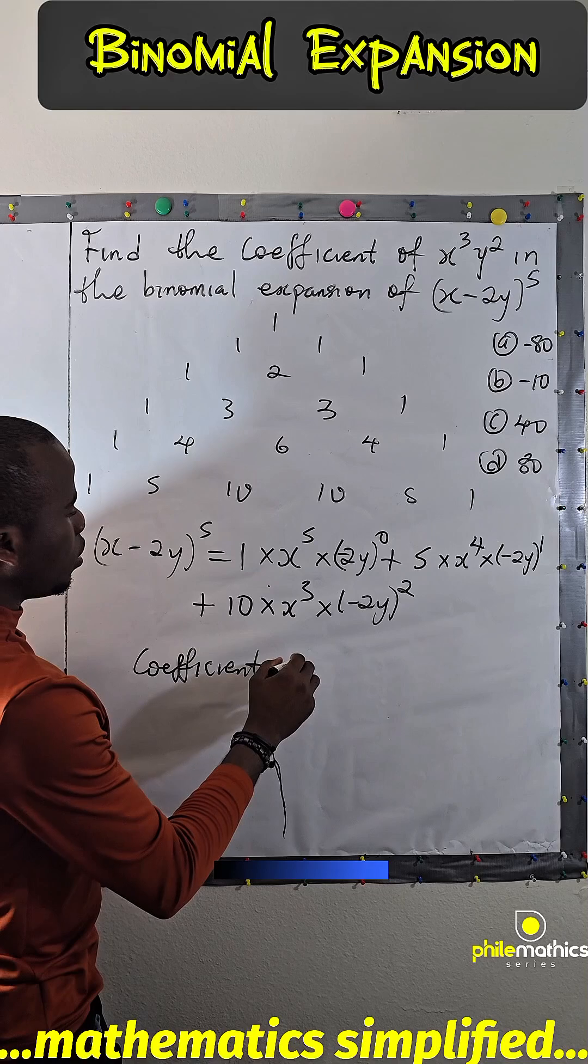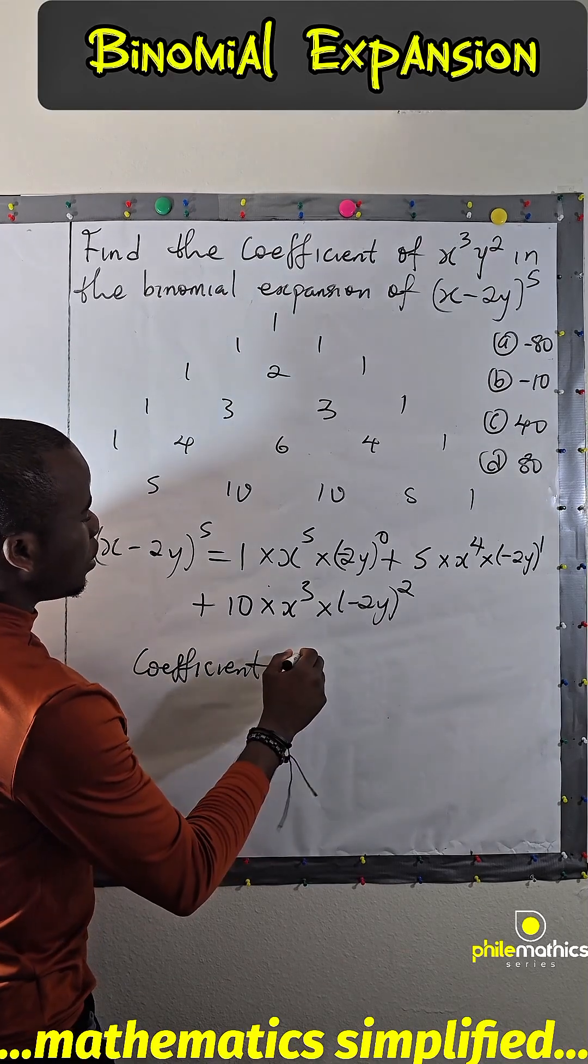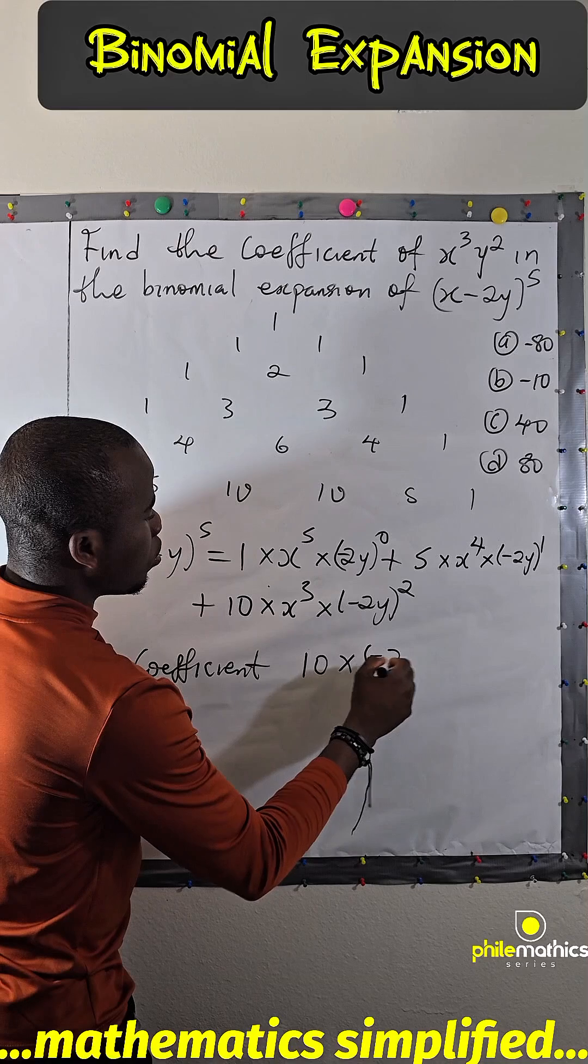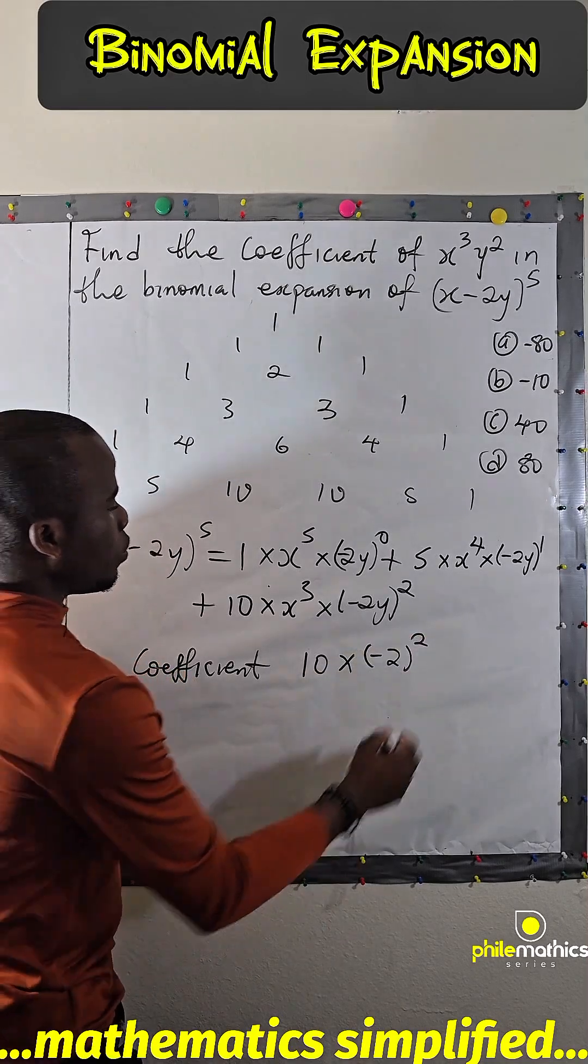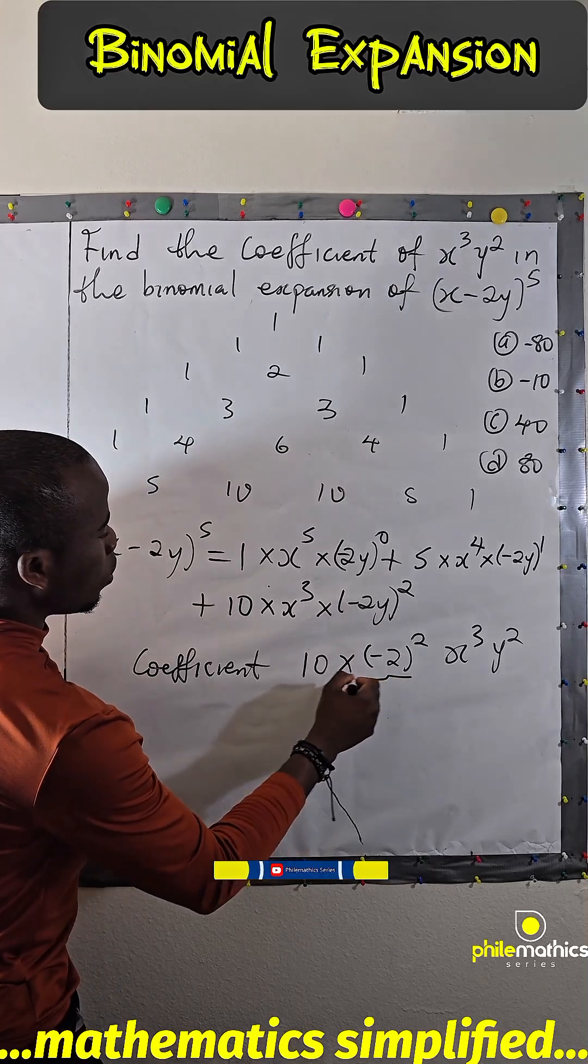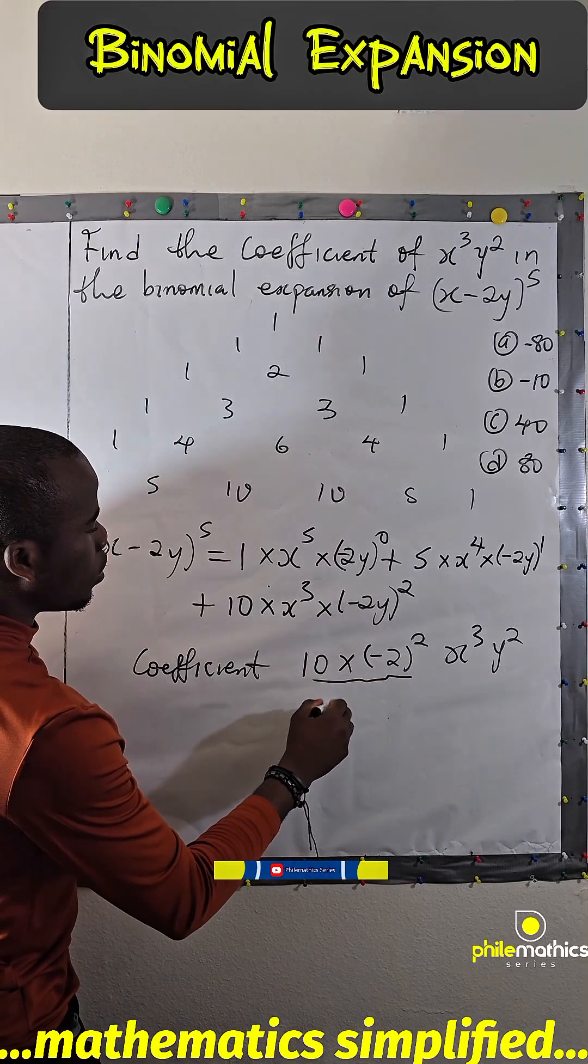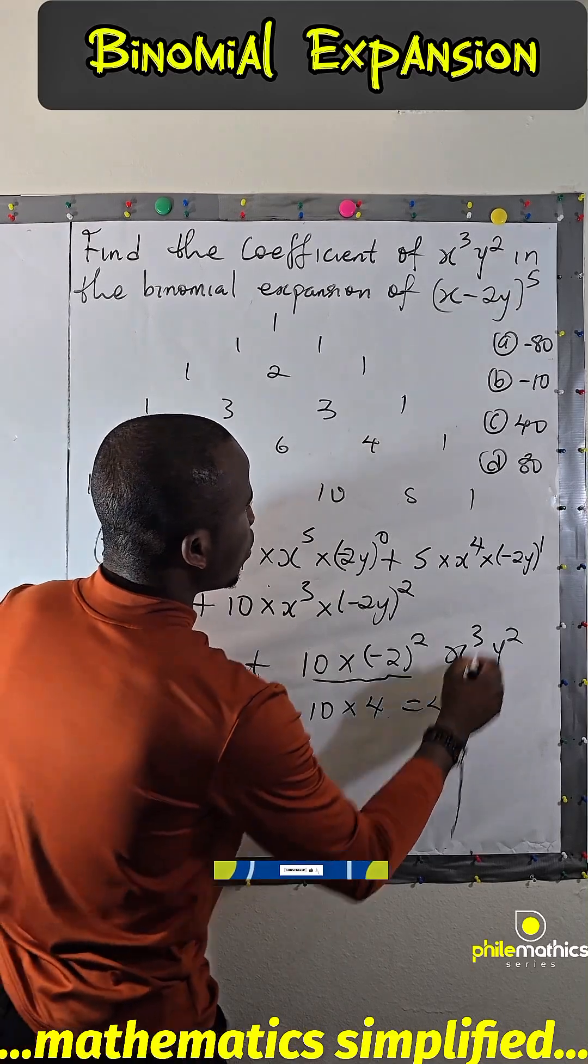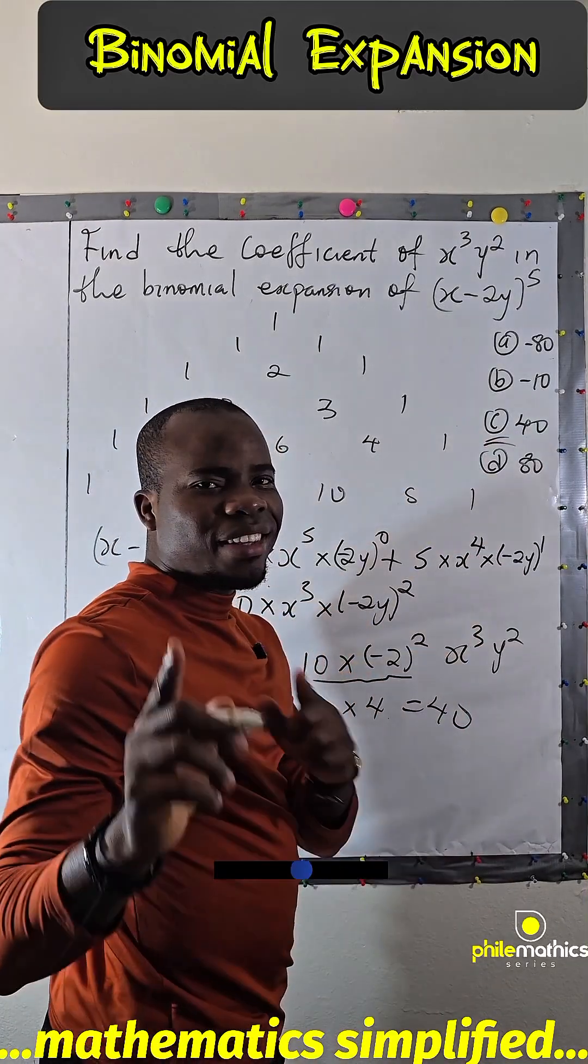If you open this, it's 10 times (-2)² because this is 10 times x³ times (-2y)², which gives x³y² - this is what we are looking for. (-2)² is 4, and 10 times 4 is 40.